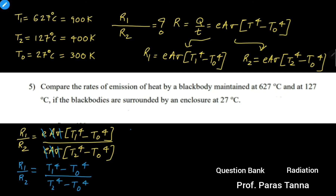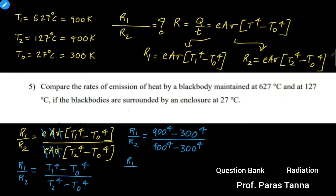Substituting the values provided to us, we get R1/R2 = (900⁴ − 300⁴) / (400⁴ − 300⁴). Cancelling 10⁴ from both the numerator and denominator, we get R1/R2 = (9⁴ − 3⁴) / (4⁴ − 3⁴).